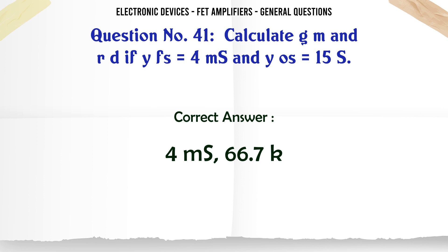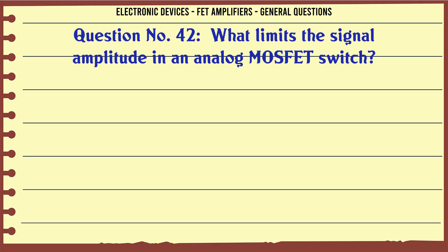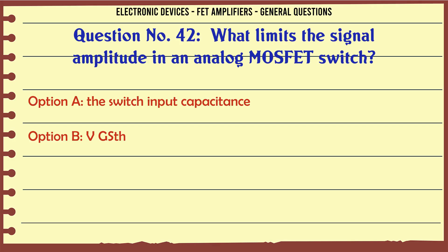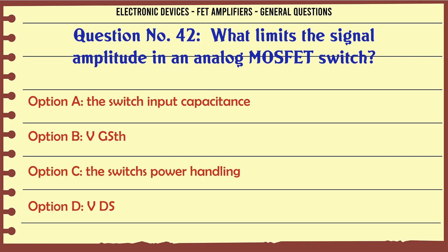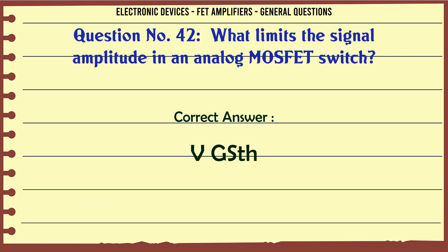What limits the signal amplitude in an analog MOSFET switch? A. Switch input capacitance. B. VGSTH. C. The switcher's power handling. D. VDS. The correct answer is VGSTH.